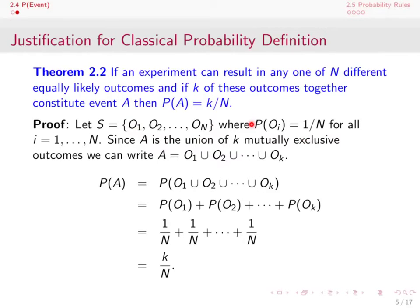By definition, the probability of A is the probability of that union of k events. Since those k events are mutually exclusive, by the third axiom, that probability equals the sum of individual probabilities, each equal to 1 over N. Adding 1/N to itself k times gives k over N. This proves the classical definition of probability is consistent with these axioms.